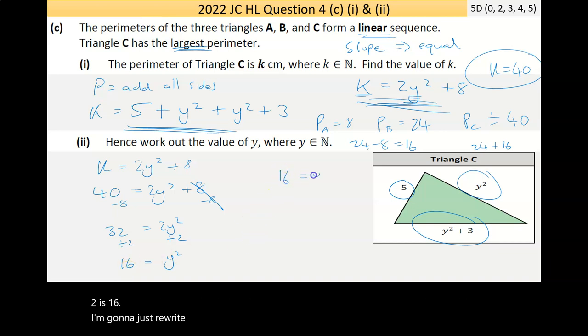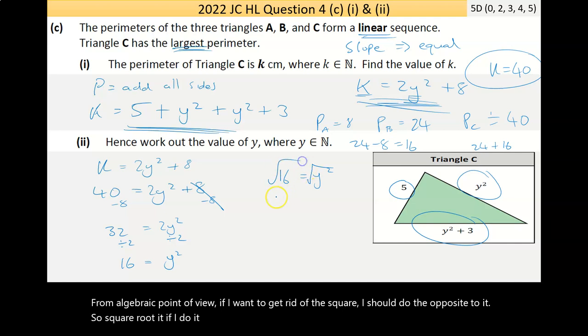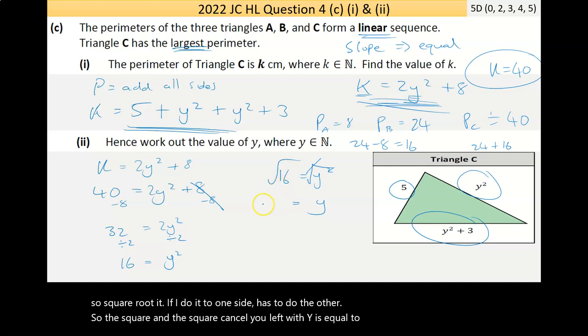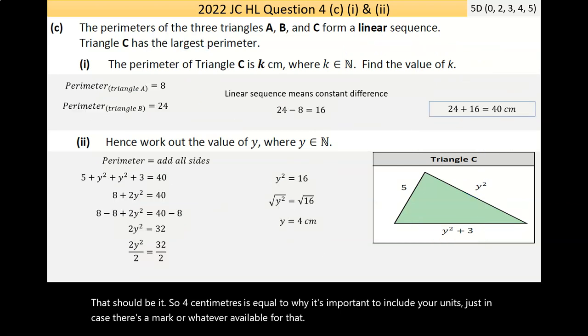I'm going to just rewrite that. Now, from an algebraic point of view, if I want to get rid of the square, I should do the opposite to it, so square root it. If I do it to one side, I have to do it to the other. So the square root and the square cancel. You're left with y is equal to the square root of 16 is 4. That should be it. So 4 centimeters is equal to y. It's important to include your units just in case there's a mark available for that.